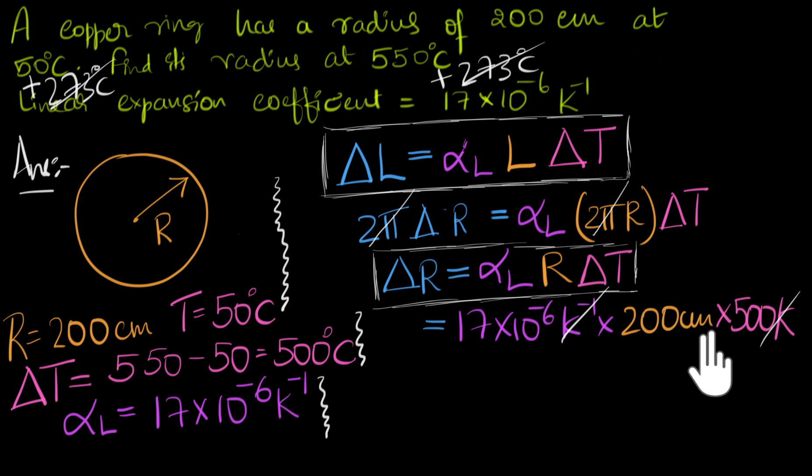We end up with the units of centimeters. That makes sense. We want the change in radii to be in centimeters. Let's just go ahead and calculate now. We have 17 times 10 to the minus 6 times 200 times 500. 5 times 2 is 10. And then we have 1, 2, 3, 4, 4 zeros. 1, 2, 3, 4 centimeters. Let's see what that gives us. That gives us 10 to the minus 1 when you multiply these two, times 17 is 1.7, 1.7 centimeters.